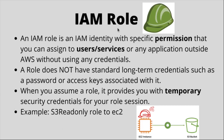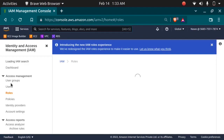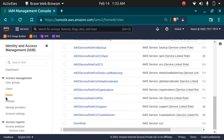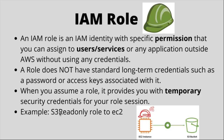The next topic is IAM roles. An IAM role is an IAM identity with specific permissions that you can assign to users, services, or any application outside AWS without using any credentials. As you can see in the dashboard there are many roles provided by AWS. For example, the role S3 read-only access means the EC2 instance will have a role to read S3 buckets, and this can be provided to any service, user, or application outside AWS without credentials. The role does not have standard long-term credentials such as a password or access key — when you assume a role it provides you with temporary security credentials for your role session.